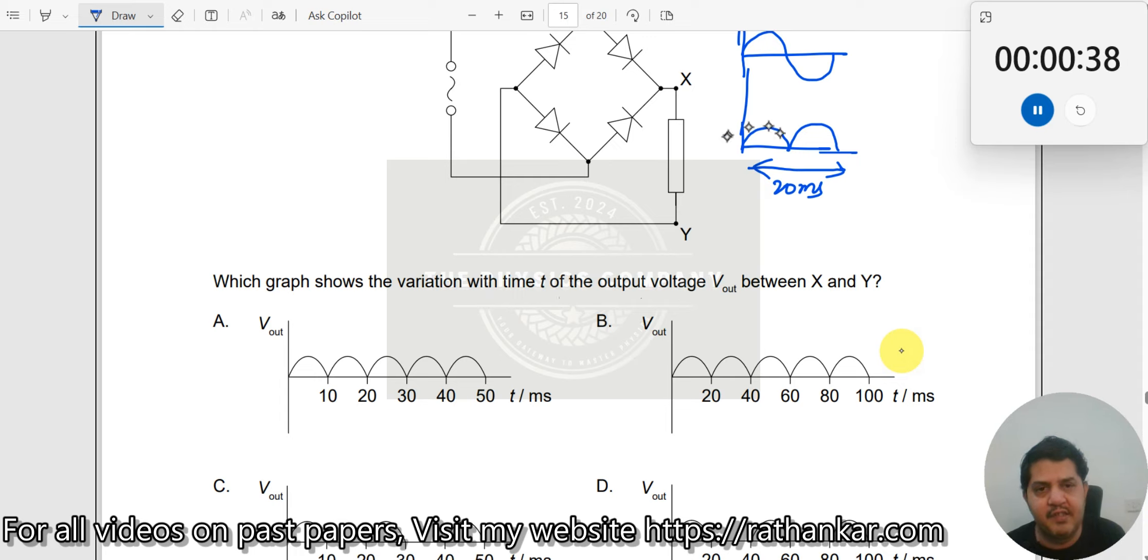This is your output voltage. This should be your output here. So the first one: you see the distance between two loops here seems to be 20 milliseconds, so therefore this is the right answer.